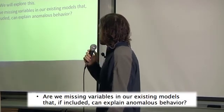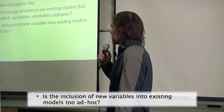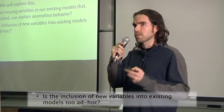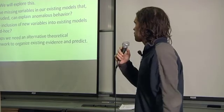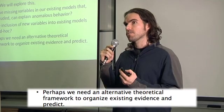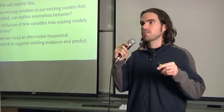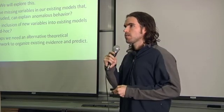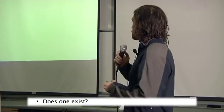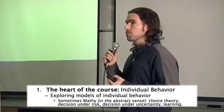Are we missing variables in existing models that, if included, could explain anomalous behavior? And if we include them, is it ad hoc — are we just adding assumptions that make models intractable or only locally applicable? Maybe there's a way to develop alternative theoretical frameworks that can organize existing behavior and predict new behavior, not just organize data that's already there. The heart of the course is individual behavior — we're going to explore models of it.